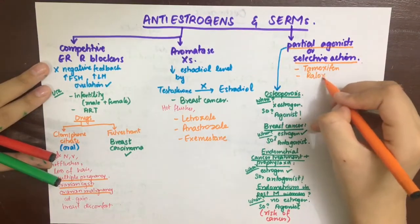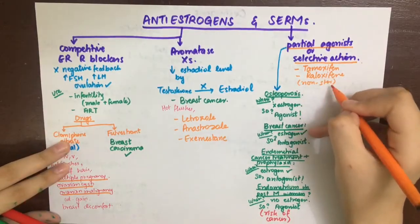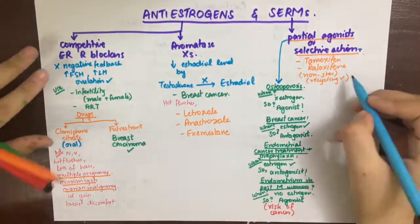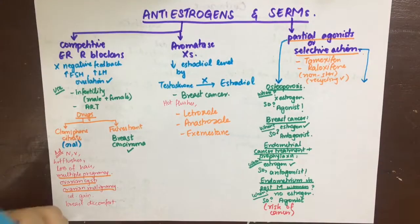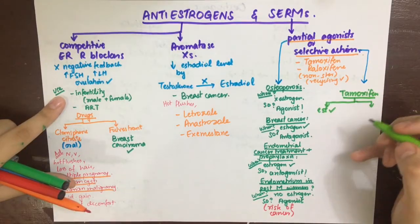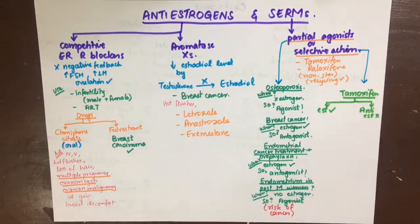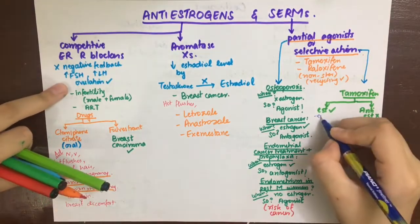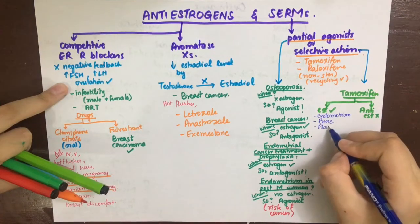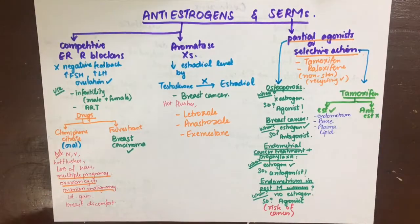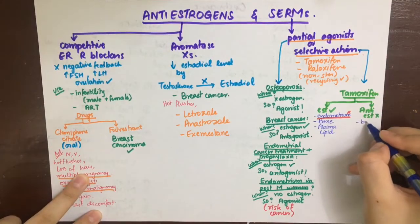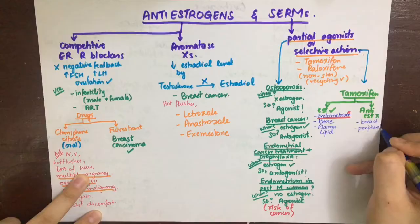Tamoxifen is a non-steroidal drug and undergoes enterohepatic recycling. Another way to understand SERMs is by their selective tissue actions. Tamoxifen has estrogenic actions on the endometrium (causing endometrial proliferation, which is a side effect — endometrial cancer), on the bone (decreased risk of osteoporosis), and on plasma lipids (increased HDL, decreased LDL). Its anti-estrogenic effects are on breast tissue and peripheral sites, where it decreases breast proliferation — making it useful in breast cancer.